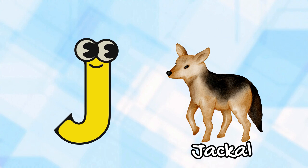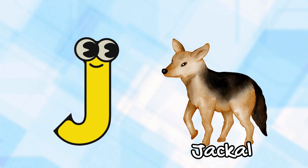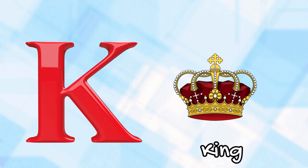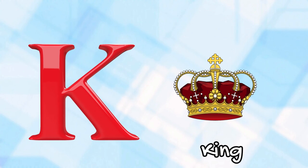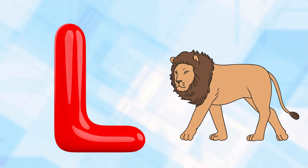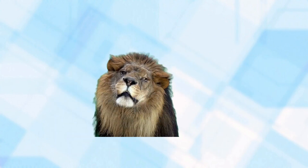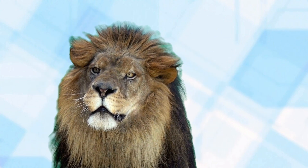I is for ice, i-i-ice. J is for jackal, j-j-jackal. K is for king, k-k-king. L is for lion, l-l-lion.